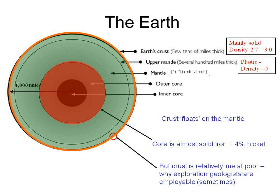There is an old bumper sticker that says, if it can't be grown, it has to be mined. The vast majority of materials used to sustain mankind are ultimately derived from mining. And because the deepest mines on Earth — the Witwatersrand gold mines — are only about 4 kilometers deep, all the minerals used by man have to be obtained from the crust. The problem is that of the three layers — core, crust, and mantle — the crust is the poorest in metals.